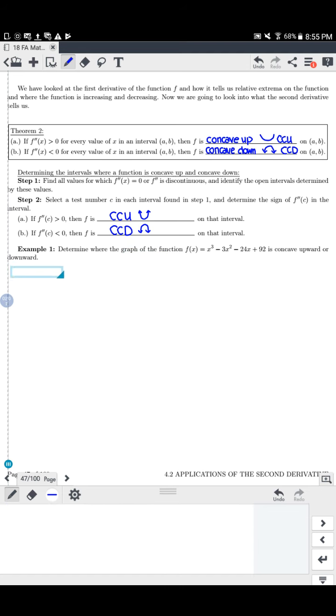So in this first example, we are given the function x cubed minus 3x squared minus 24x plus 92. And we want to figure out where is it concave upward and where is it concave downward. So we're going to do two steps like before. Our first step is to take our second derivative now and set it equal to zero. And then in our second step, we're going to make a sign chart.